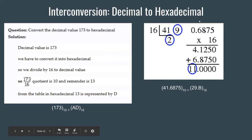Now let's take a look at an example which has a decimal fractional part as well. First we divide the integer part by 16. If we divide 41 by 16, the quotient is 2 and the remainder is 9, so the hexadecimal equivalent of the integer part 41 is 29, using the bottom-to-top approach. We place a decimal point after this.